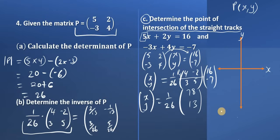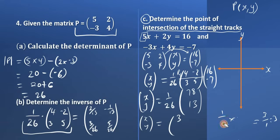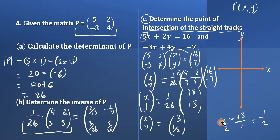Now we find 1 over 26 of each entry. 1 over 26 times 78: 26 goes into 78 three times, so that gives us 3. Then 1 over 26 times 13: 26 goes into 13 once with 13 going twice into 26, giving us 1 half. So we can now recognize that we have equal matrices, meaning x equals 3 and y equals one half.